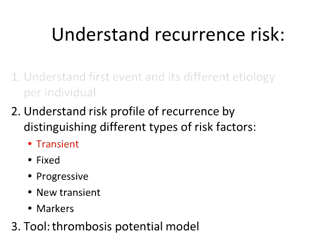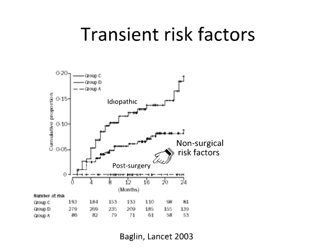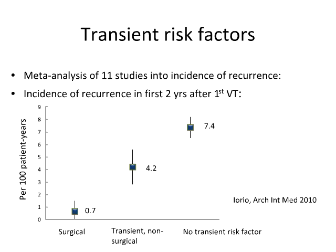Now I'd like to discuss the different types of risk factors, starting with transient ones. This is a classical picture by Trevor Baglin, where he found that people who had surgery afterwards had a very low risk of recurrence — the line is essentially flat. Whereas people who had no transient risk factors at the time of their event have a very high idiopathic recurrence risk. In between is the group exposed to non-surgical transient risk factors like hospitalization and prolonged immobilization. This was confirmed by Jorio in a meta-analysis of 11 studies: people without a transient risk factor had almost a tenfold increased risk compared to patients who had surgery before their first event.